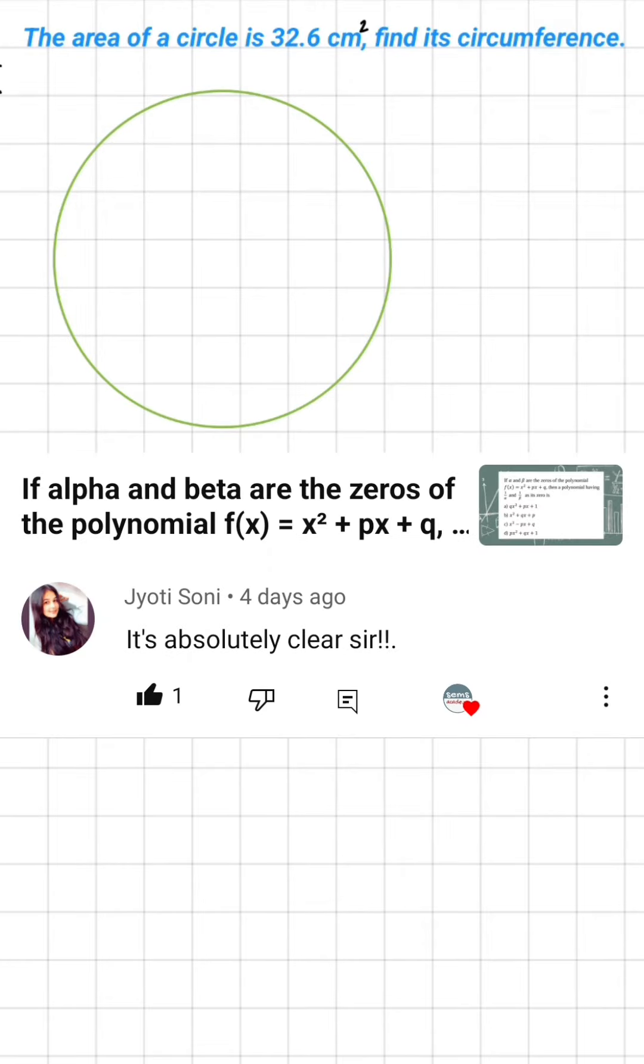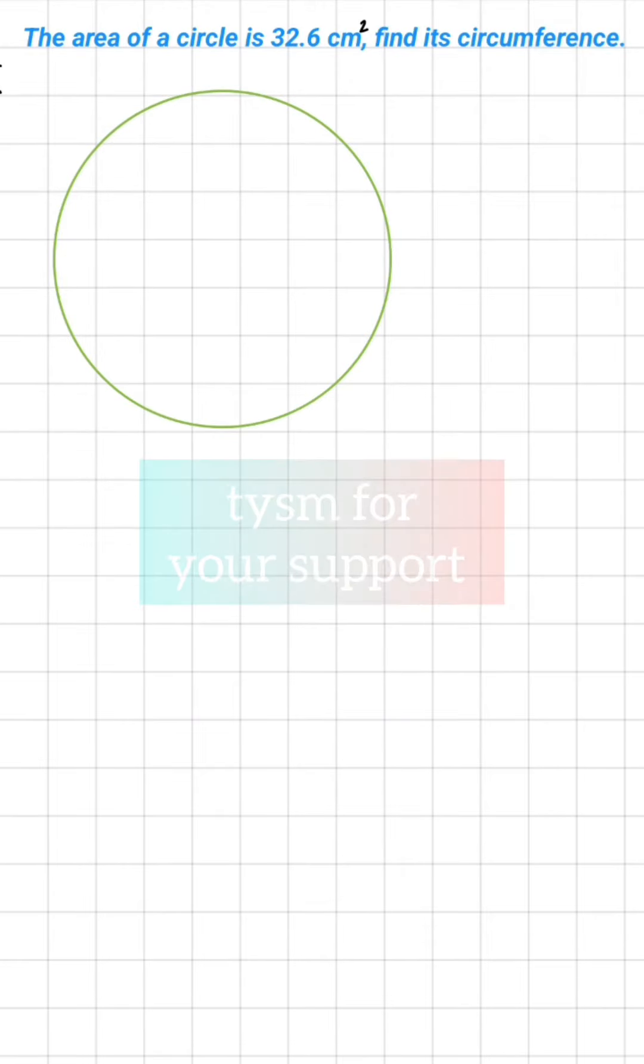The area of a circle is 32.6 cm² find its circumference. We have to find the circumference. So let's assume the radius of this circle is R.